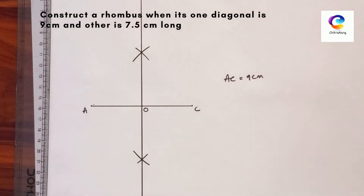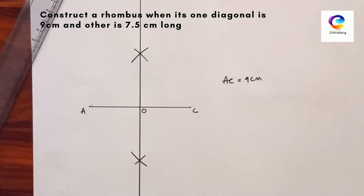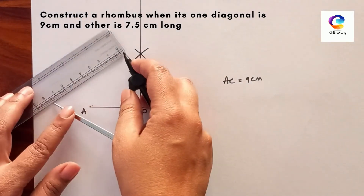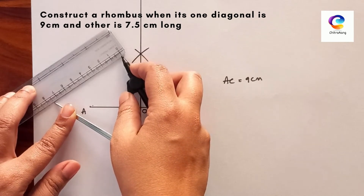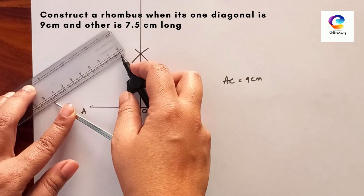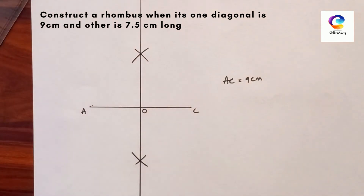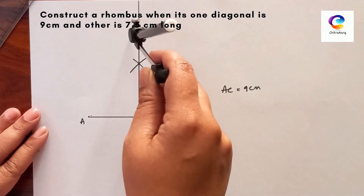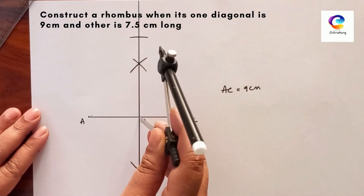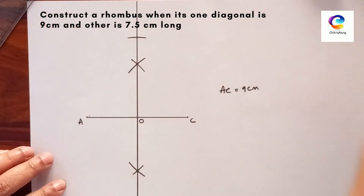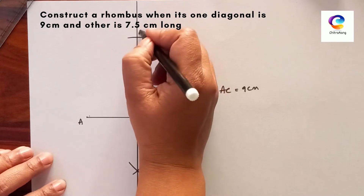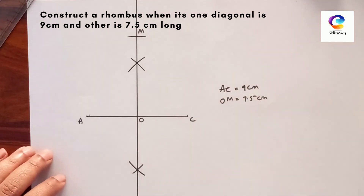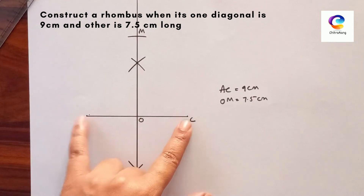Now, the second diagonal is given 7.5 cm. Take a distance of 7.5 in the compass — from 0 to 7.5, take the exact measurement. From point O, mark a distance of 7.5 cm and give the name M here. So OM is equal to 7.5 cm. So these are the two diagonals — 7.5 cm and 9 cm.